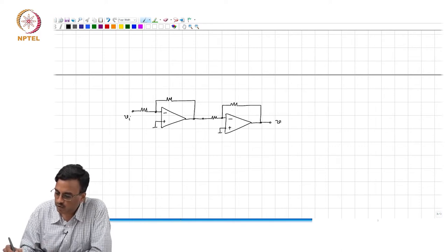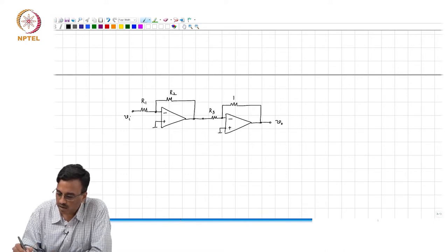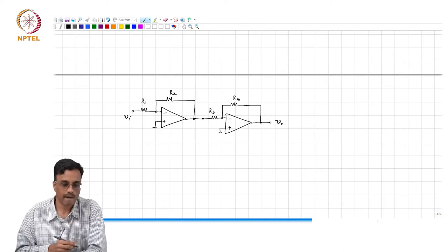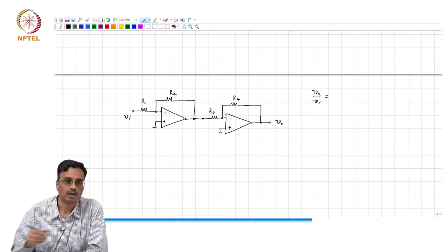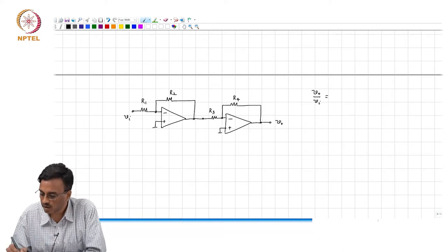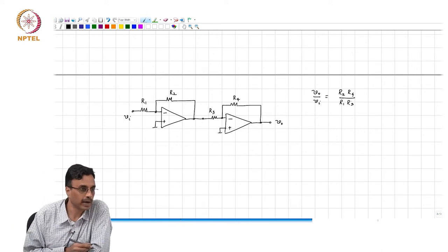Let us say this is vi, this is vo, this is R1, this is R2, this is R3 and this is R4. What is the gain from the input to the output? Well, the voltage here is basically R2·R4 by R1·R3.